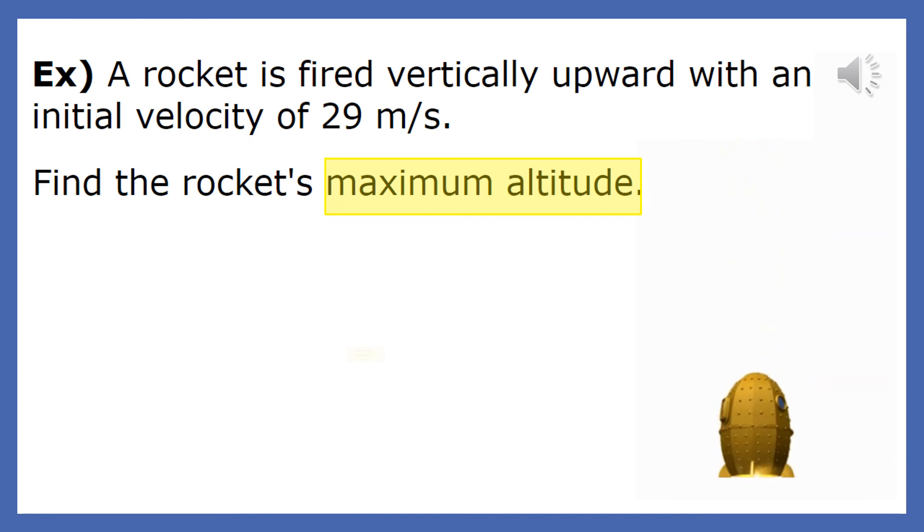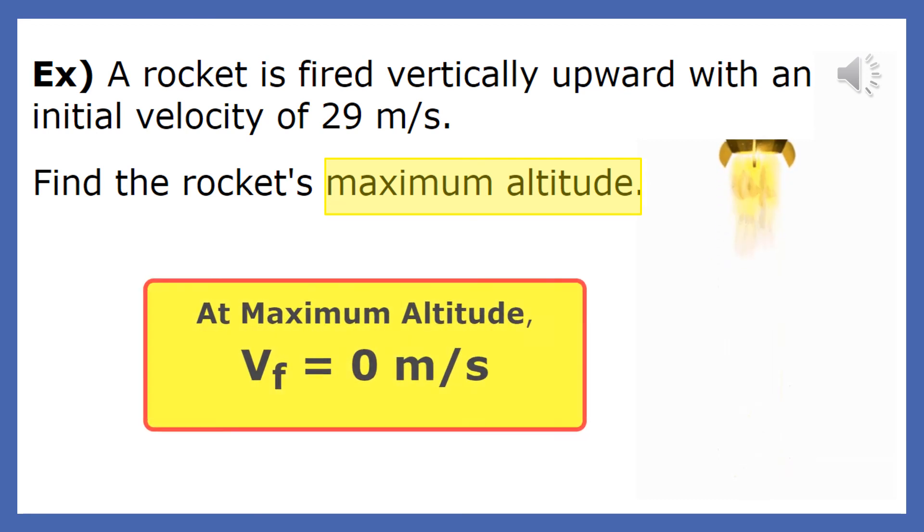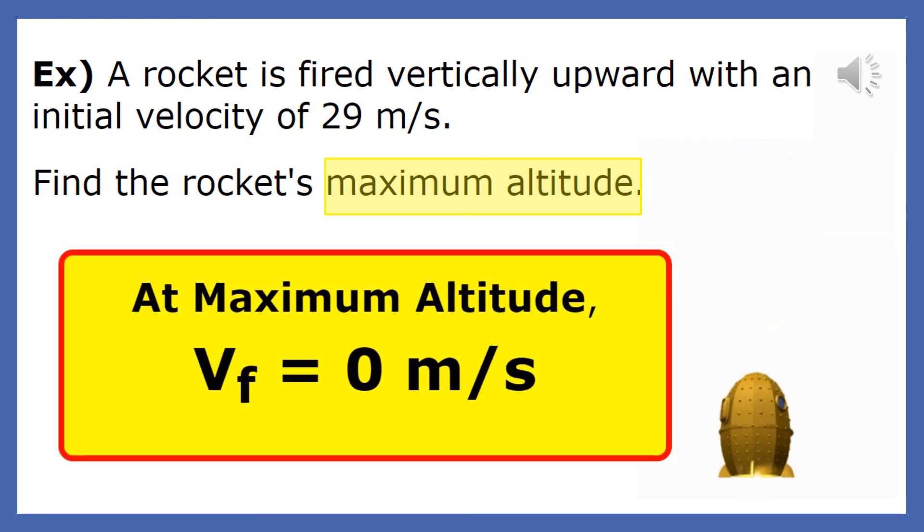The last two problems we did involve an object dropped, but this one involves an object sent upward. Whenever you see that a problem mentions an object reaching its maximum altitude or peak, you know that its final velocity equals zero.